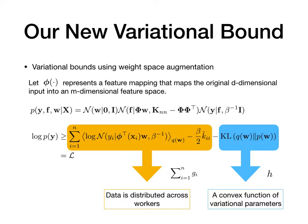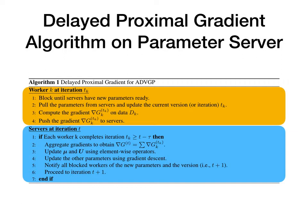Using these properties, we can derive the delayed proximal gradient algorithm for ADVGP. The workers will pull the parameters as they receive new parameters. They will compute the local gradient, then push the gradient to the server without waiting. The servers are passive and they wait for push and pull requests from the workers. They update the parameters after collecting enough gradient updates. Most of the communications are asynchronous and we can reduce the total waiting time.